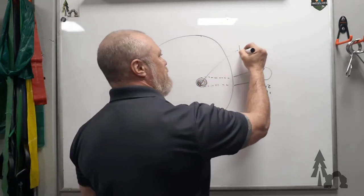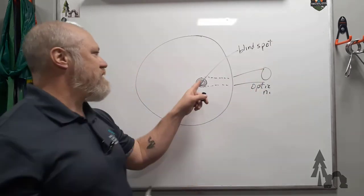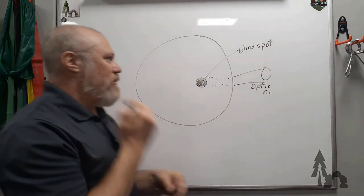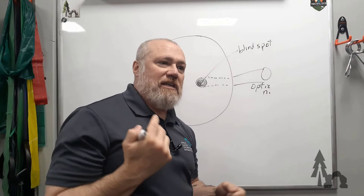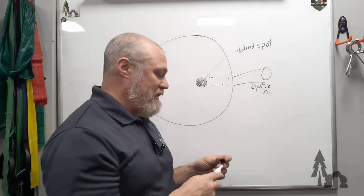So, this is also your blind spot, because there are no photoreceptive cells in that area. You don't actually have a blind spot because the visual cortex in your occipital lobe just sort of fills in what it thinks should be there. It's sort of a neurologic trick.